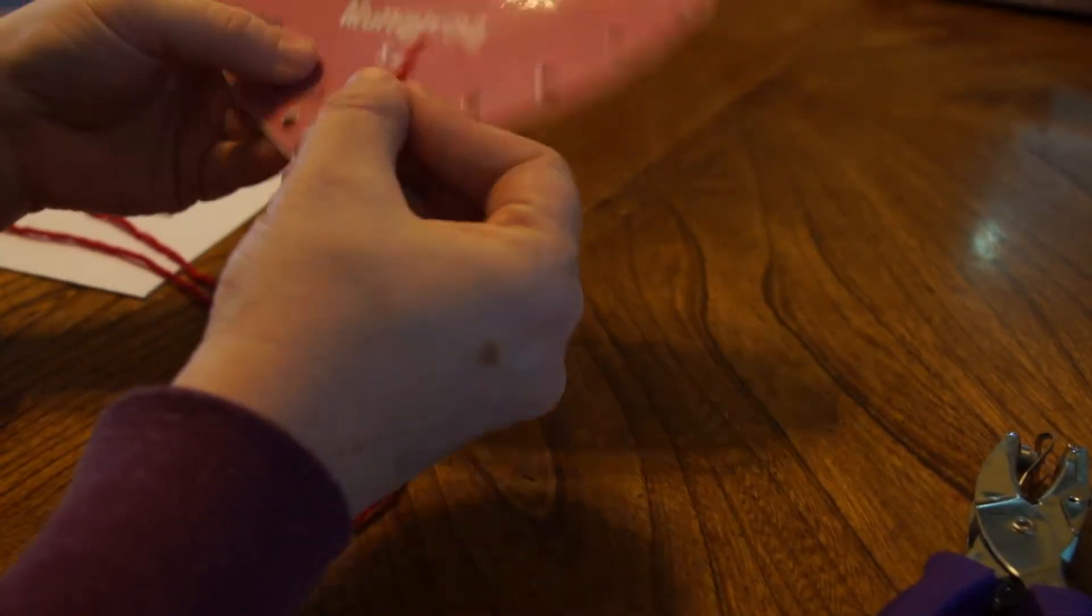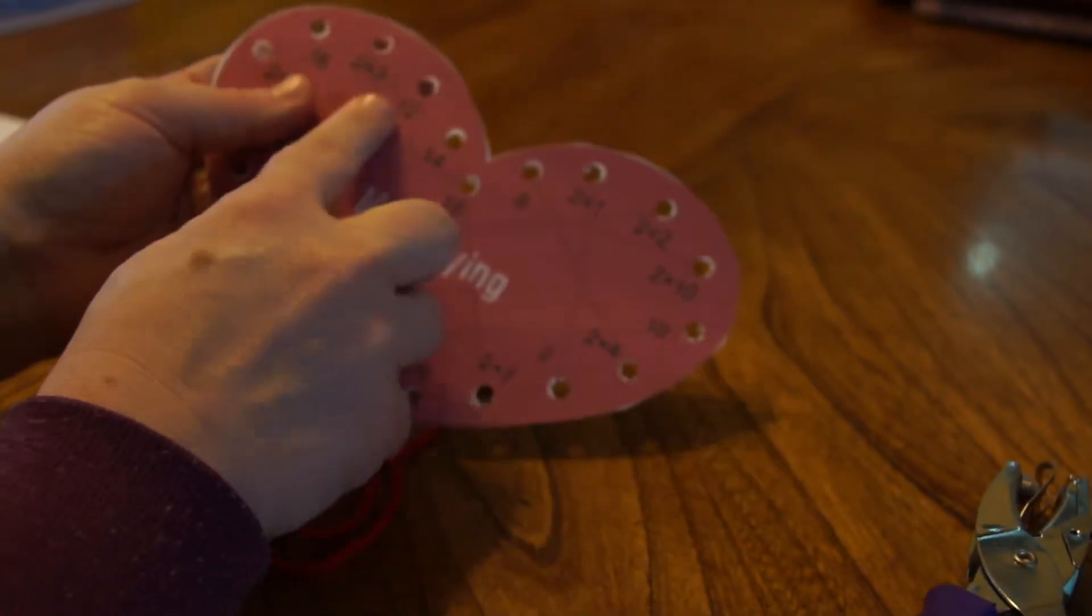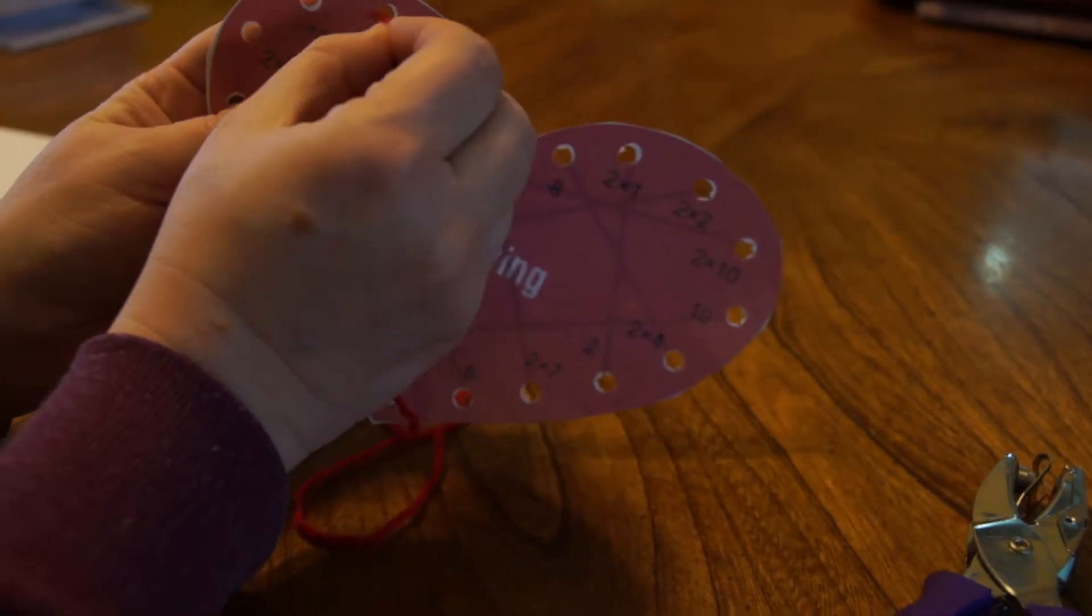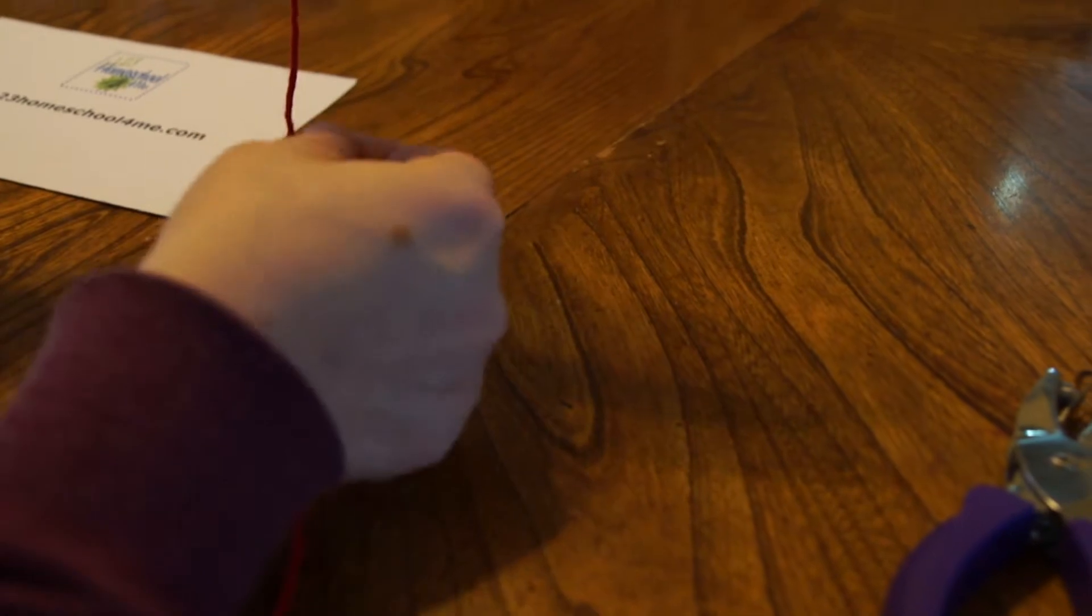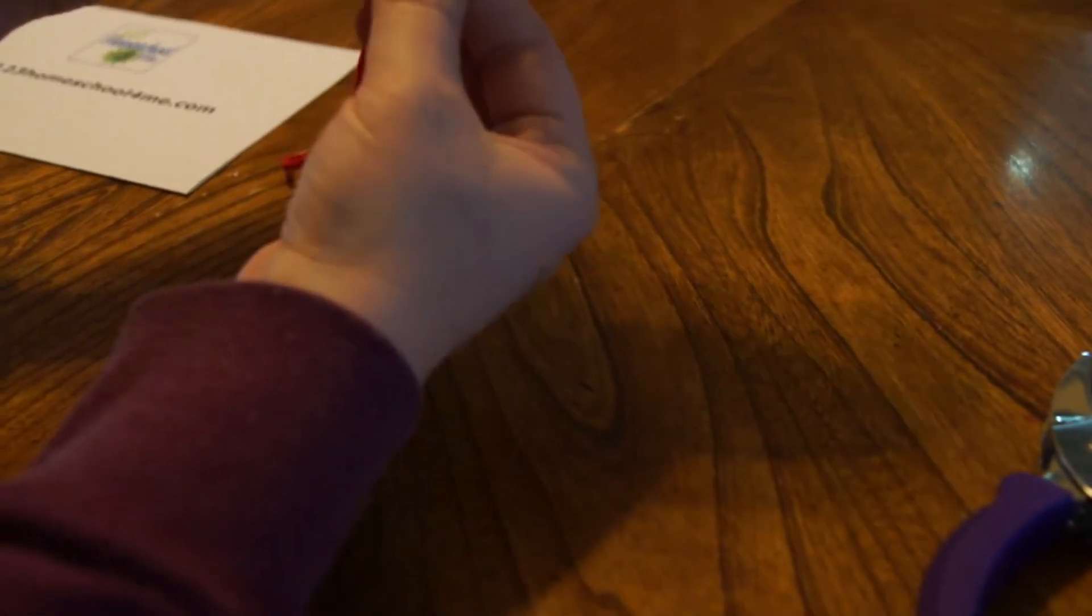So then to do this activity you can start anywhere you want to. I'm going to start here. So 2 times 3, so you go down the hole like this. 2 times 3 is 6, so I'm going to come up the hole that says 6.